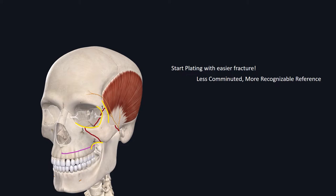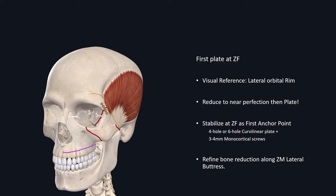Next, we'll discuss hardware application. Whenever you start plating, begin with your easiest fracture — less comminuted, with good exposure. I'll generally start the plating process at the zygomatic frontal suture fracture site, because the lateral orbit is very thick bone and even in severe impact its integrity is relatively well preserved with good visual reference. Once you have good reduction at the ZF site, stabilize it by placing either a 4-hole or 6-hole curved linear plate using 3 or 4 mm monocortical screws. This provides an anchoring point to further refine reduction at the zygomatic maxillary segment.